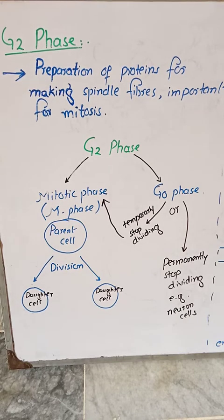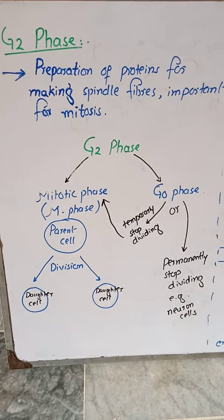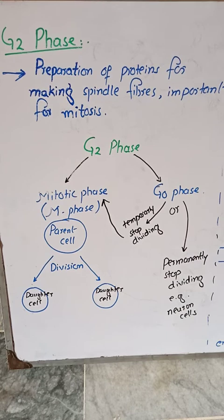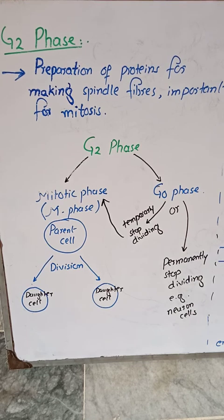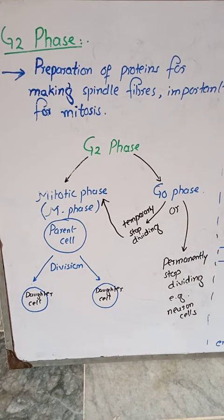If the cell enters G0 phase, it means that the cell will stop dividing. This stop in division may be temporary or permanent. If a cell stops dividing permanently — for example neuron cells — once they are formed they will never divide. Alternatively, if a cell enters G0 phase temporarily, it may later re-enter the mitotic phase, during which the parent cell is divided into two equal daughter cells.